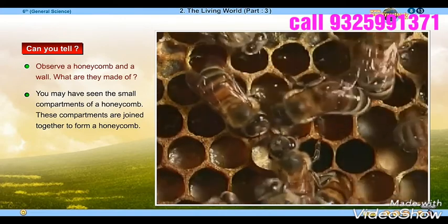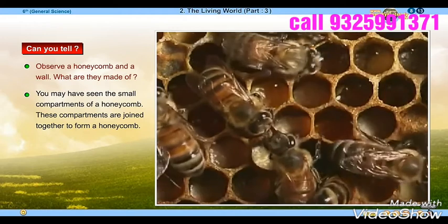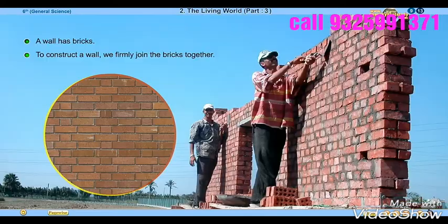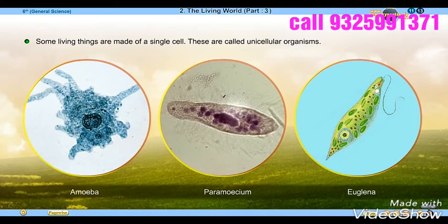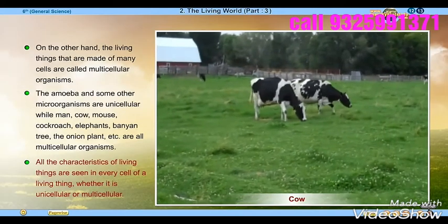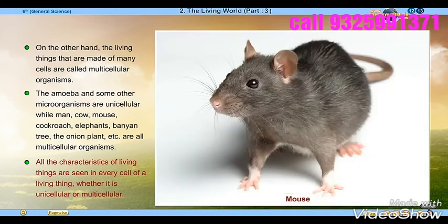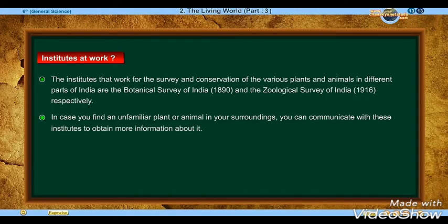Observe a honeycomb and a wall. What are they made of? You may have seen the small compartments of the honeycomb. A wall has bricks. To construct a wall, you need a firmly cellular structure. Some living things are made of a single cell. On the other hand, living things that are made of many cells are called multicellular organisms.